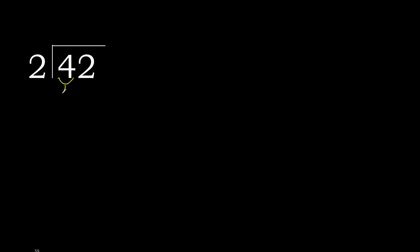42 divided by 2. Here, 4 is not less, therefore with 4. Here, 2 multiplied by which number is nearest to 4 but not greater? 2 multiplied by 3 is 6 — 6 is not greater. 2 multiplied by 2 is 4. 4 is not greater. 4 minus 4 is 0.